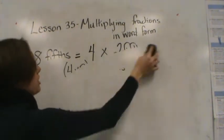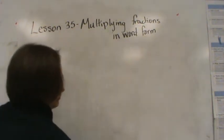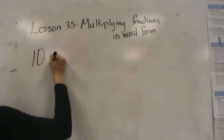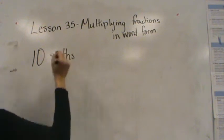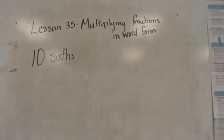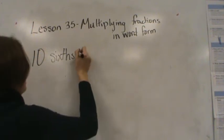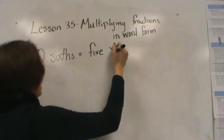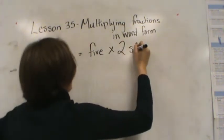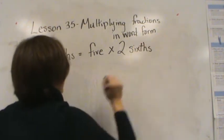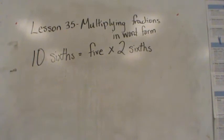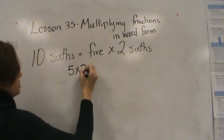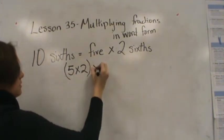Let's try another one — 10 sixths. So 10 sixths is the same as saying 5 times 2 sixths, because 5 times 2 is 10. In addition to that, that's like saying 5 times 2, which is 10, times 6.